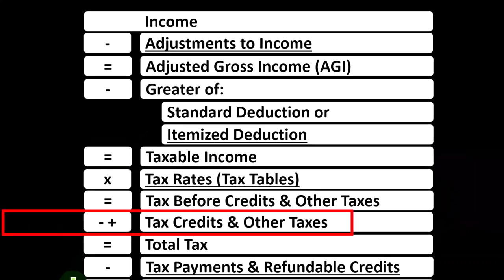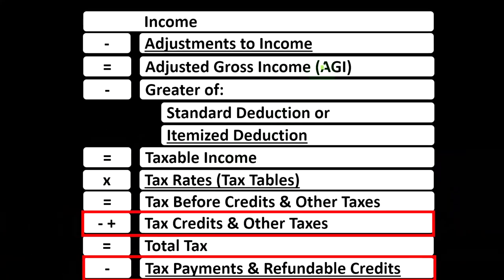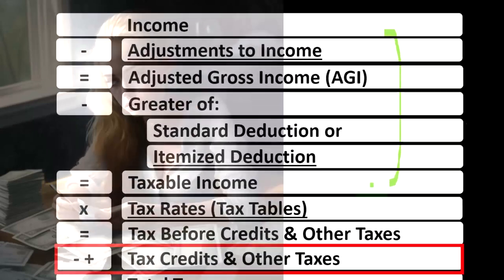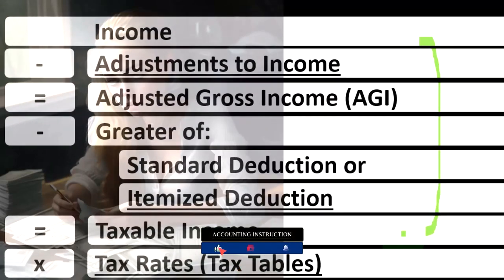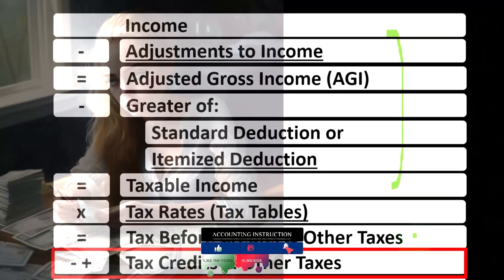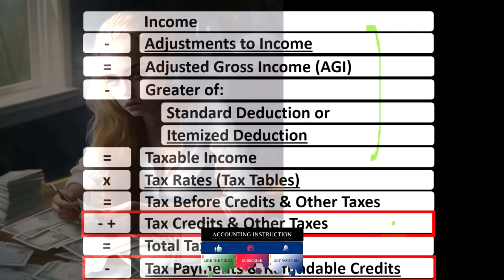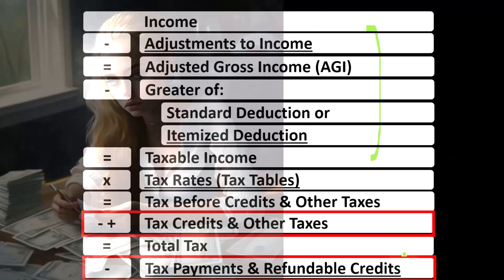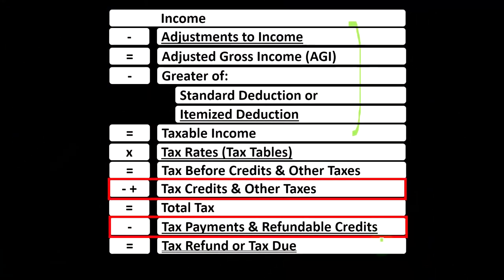Looking at the income tax formula, we're at the bottom where the credits are located. The first half of the income tax formula is in essence an income statement, ending at taxable income, similar to net income. We then calculate the tax on taxable income — not using one rate, not a flat tax — but using the progressive tax system to get to the tax before credits and other taxes, such as self-employment tax. Then we have payments in the form of withholdings or estimated tax payments to get to the tax refund or amount due.